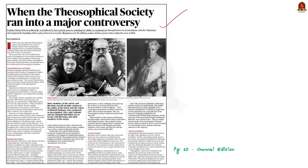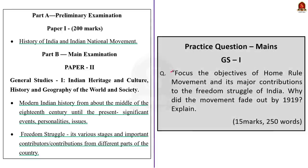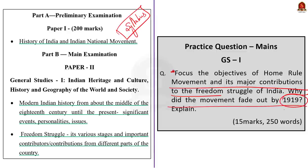We all know that Annie Besant was a prominent leader of the Theosophical Society. She played an active role in our freedom struggle. The Home Rule League movement was the brainchild of Besant. The question for discussion is: discuss the objectives of the Home Rule Movement and its major contribution to the freedom struggle of India. Why did the movement fade out by 1919? Explain.